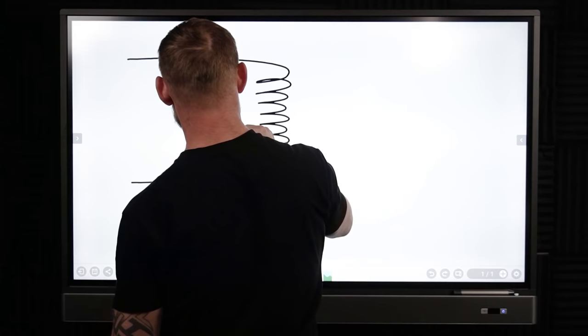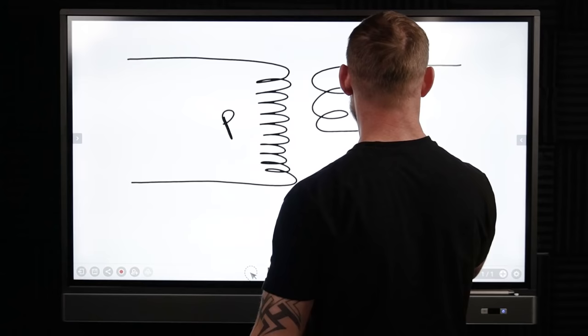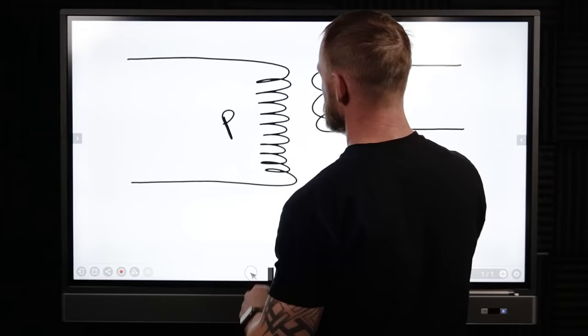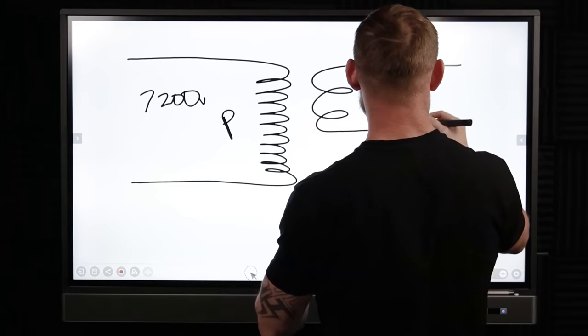Then our secondary side, let's say that we've got less of those windings. So our primary voltage, we'll just say we're at 7200 volts, and on our secondary side we'll just say that we have 240 volts.